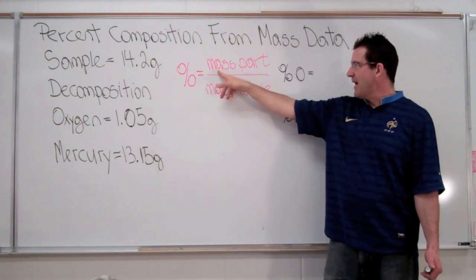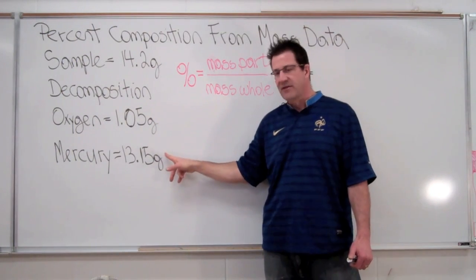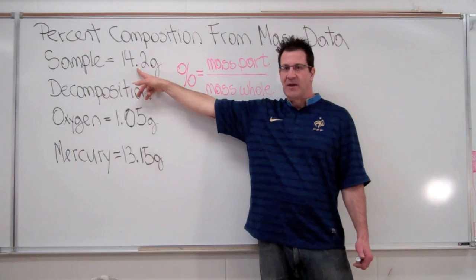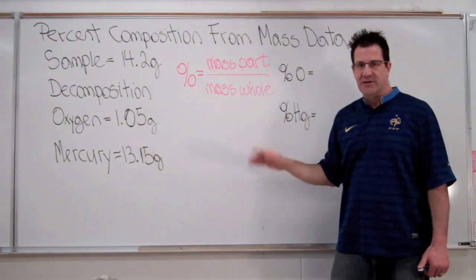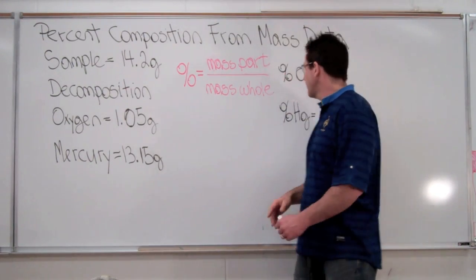So you can say we're going to take the mass of each part of our sample, the 1.05 and the 13.15, and we're going to divide that by the whole mass which is 14.2 grams. And we can do that for oxygen, we can do that for mercury, and we can come up with the percent composition for each of those elements in our compound. Okay, so let's go ahead and do that.